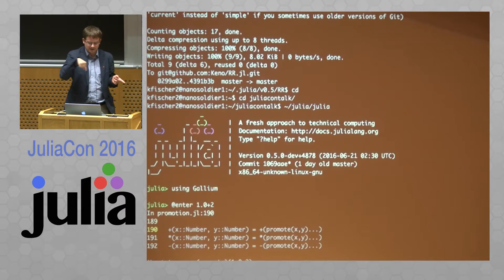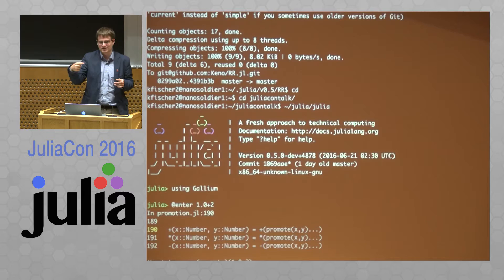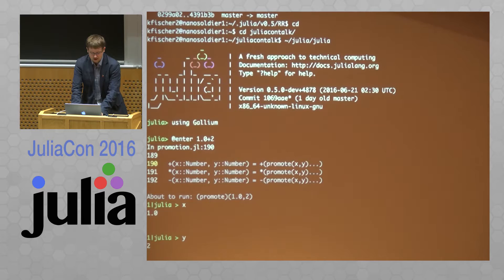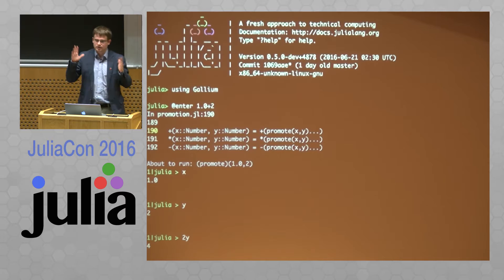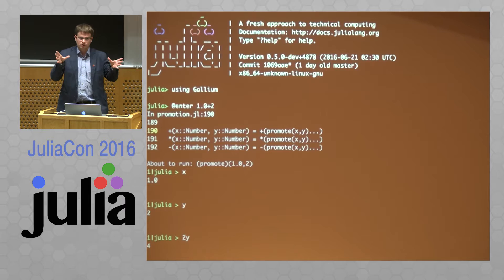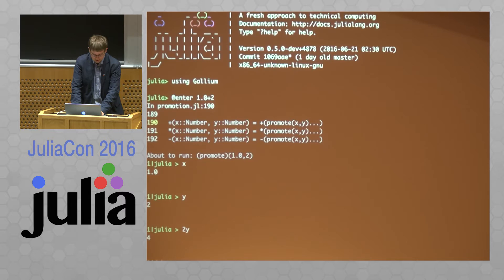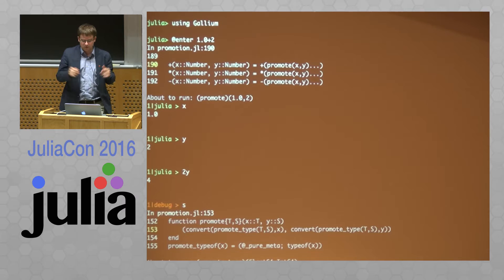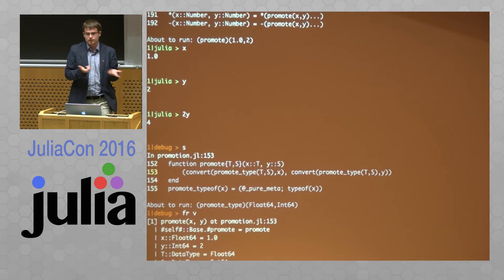It works just like the other REPL modes for shell mode or help mode at the standard Julia prompt — backtick enters, backspace exits. In expression evaluation mode you can evaluate expressions using the local variables; I just looked at `x` and `y`, but you can do `2*y` and more complicated things. This is a full Julia REPL with the difference that all local variables currently available to the debugger are also in scope. The `s` command steps in just as you'd expect — above we were in the `plus` function and now we're in the `promote` function.